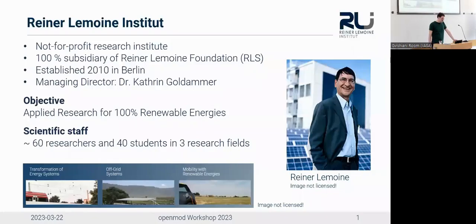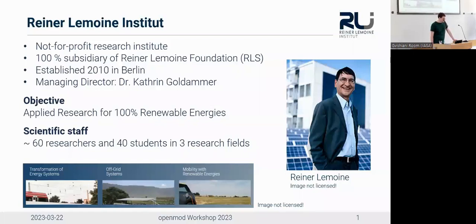Who am I? The RLI — Reiner Lemoine Institute — is a non-profit research institute based in Berlin. We are a subsidiary of the Reiner Lemoine Foundation. Reiner was one of the solar pioneers in Germany, founding companies like Q-Cells and Solon. He gave most of his fortune to the foundation, which allows us to do good work focused on open source, open science, and open data, contributing toward a world of 100% renewable energies.